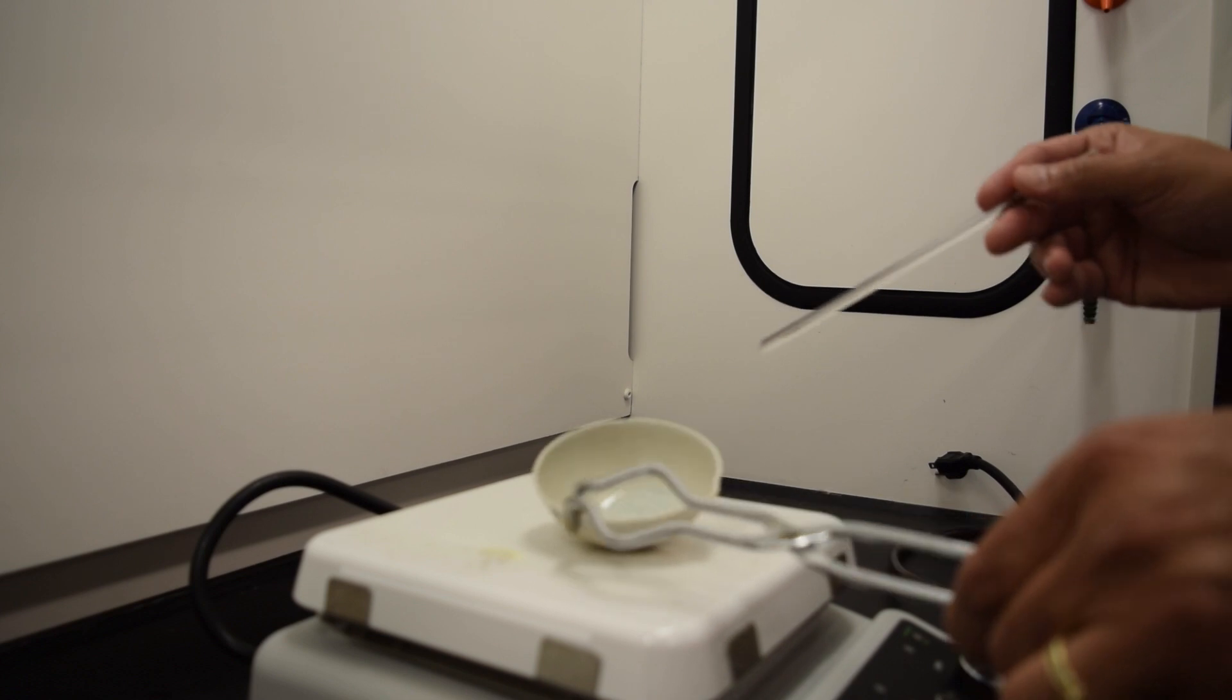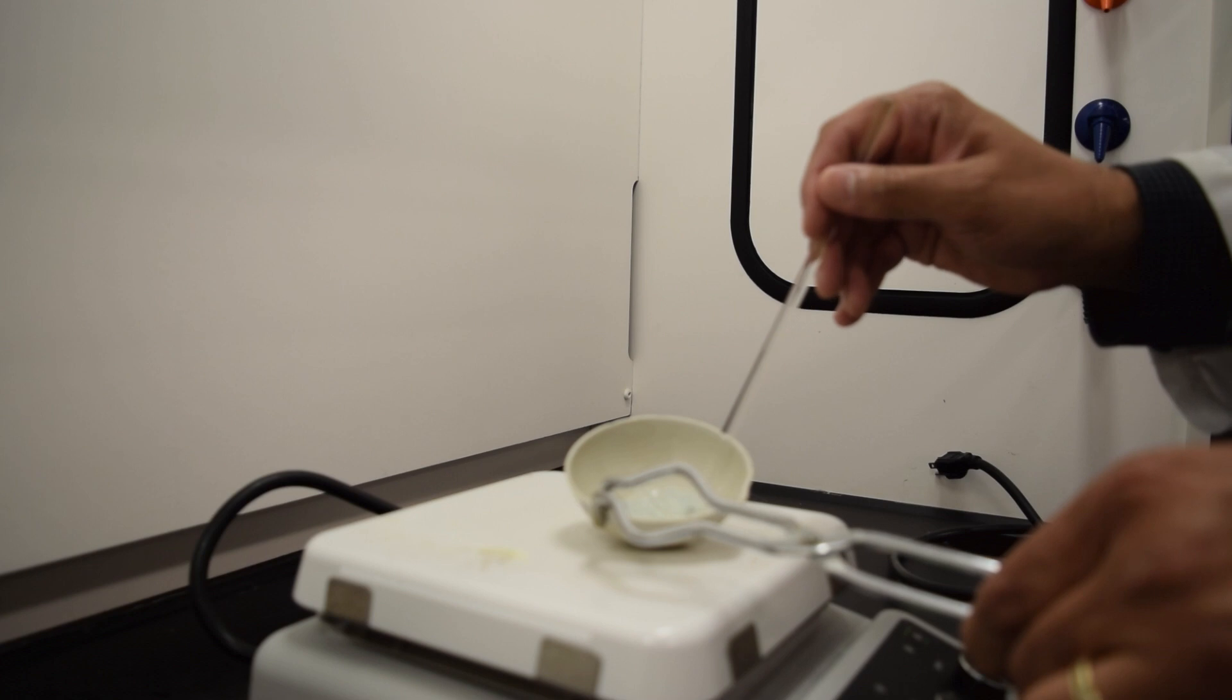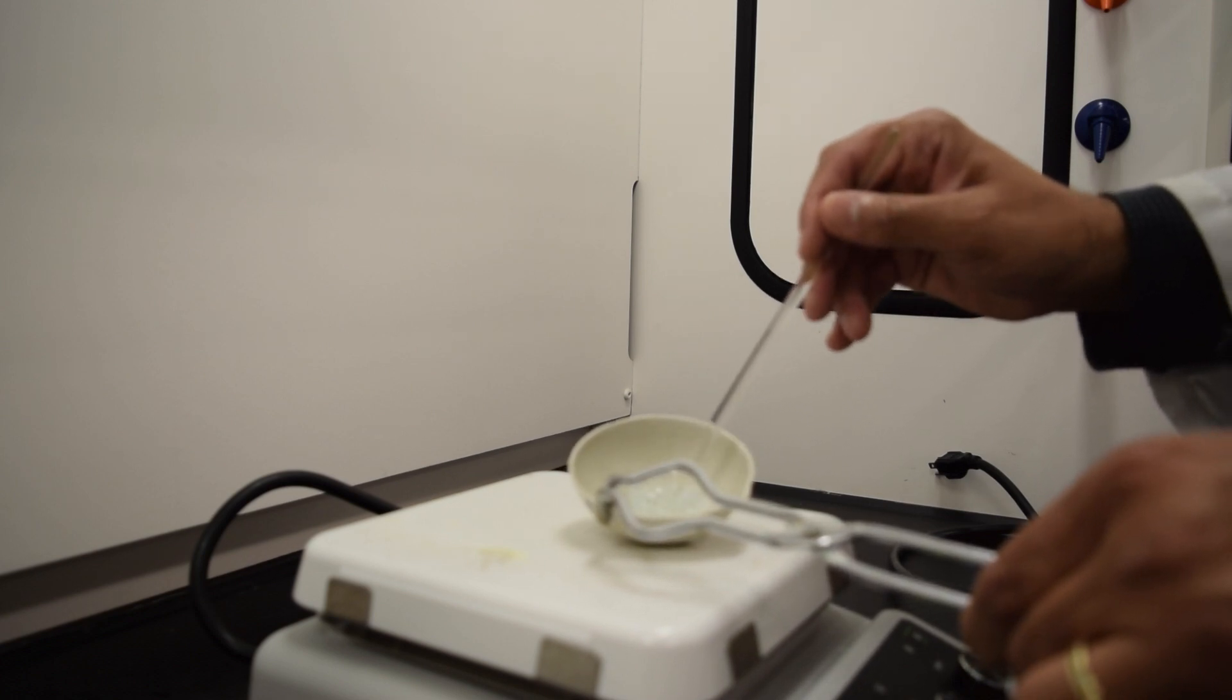Use tongs to hold the evaporating dish and use a glass stirring rod to stir the solid in the dish to make sure the solid heats evenly to maximize the water evaporated.